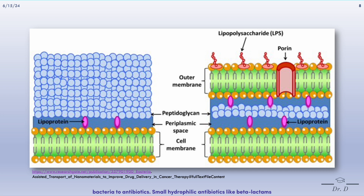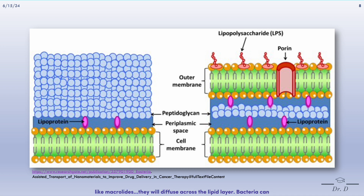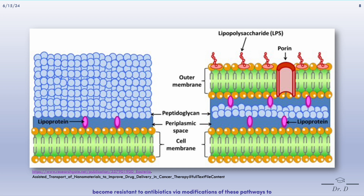Small hydrophilic antibiotics like beta-lactams enter gram-negative bacteria via porins, while hydrophobic antibiotics like macrolides diffuse across the lipid layer. Bacteria can become resistant to antibiotics via modifications of these entry pathways, for example, the down-regulation of porins.